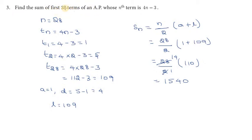In this AP, we need to find the first 28 terms. The nth term is given as tn = 4n - 3. We can use this formula to find the required values.